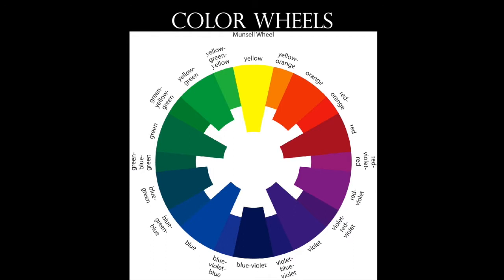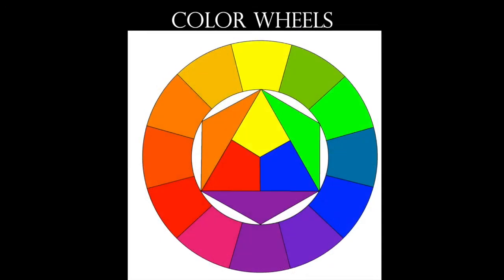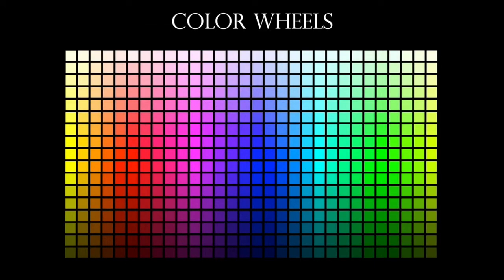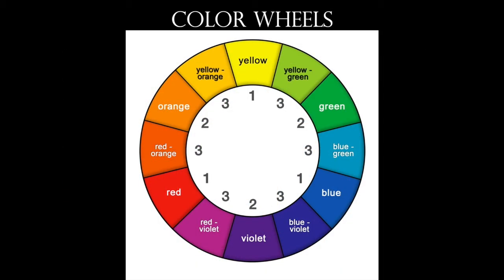We need to know how colors interact with one another, and the best way to do so is through a color wheel. Color wheels have been around since the 1700s — the Munsell wheel is very popular. The 12-step color wheel I like to use shows not only the colors and their names, but also numbers inside the wheel indicating primary, secondary, and tertiary colors.